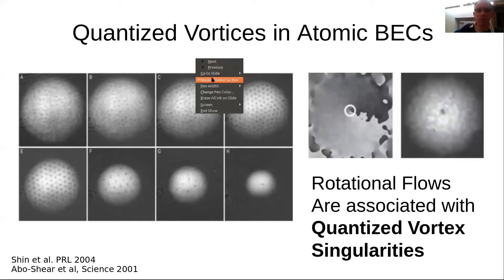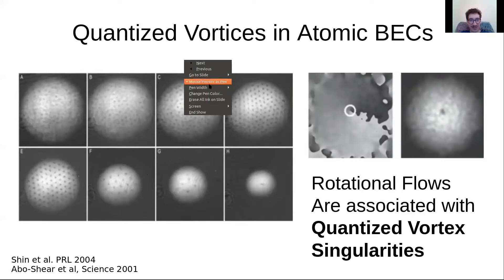First, a little bit of background on the problem of multiply charged vortices in general. These have been looked at for a long time. In all kinds of Bose-Einstein condensates, rotational flows are associated with vortex singularities—points where the density goes to zero and about which the phase of the wave function wraps by some integer multiple of 2π.